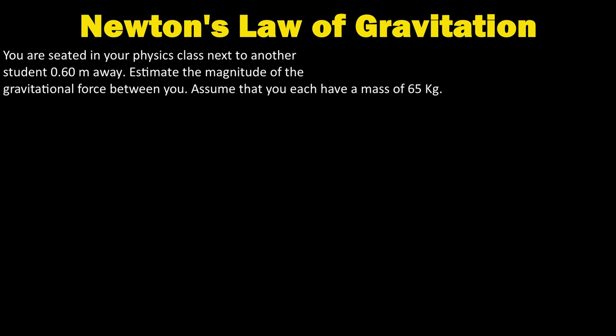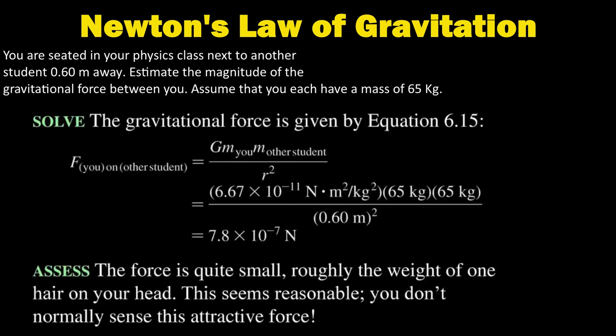We will apply the same formula. Here is the solution: F equals G m1 m2 over r squared. Here m1 and m2 are both the same because both are 65 kilogram as assumed. G is the constant value of 6.673 multiplied by 10 power minus 11 newton meter squared per kilogram squared, and the distance between them is 0.60. We will take the square value here. When we substitute the value and solve, it will get 7.8 multiplied by 10 power minus 7 newton.